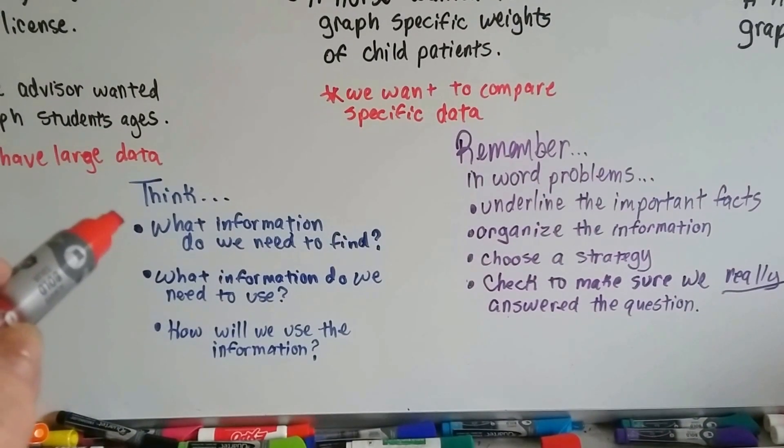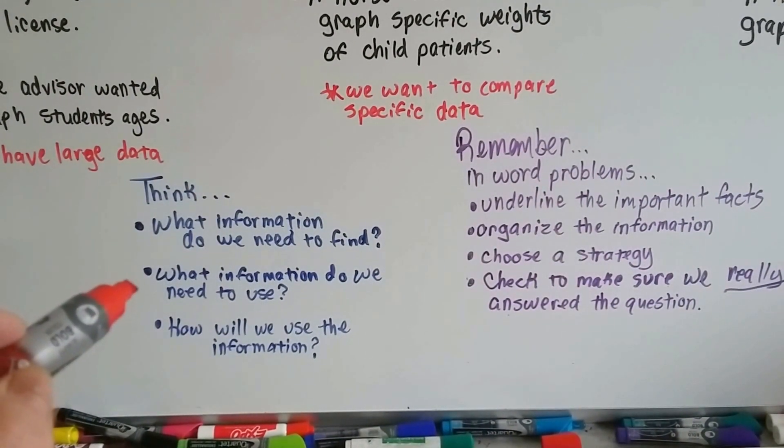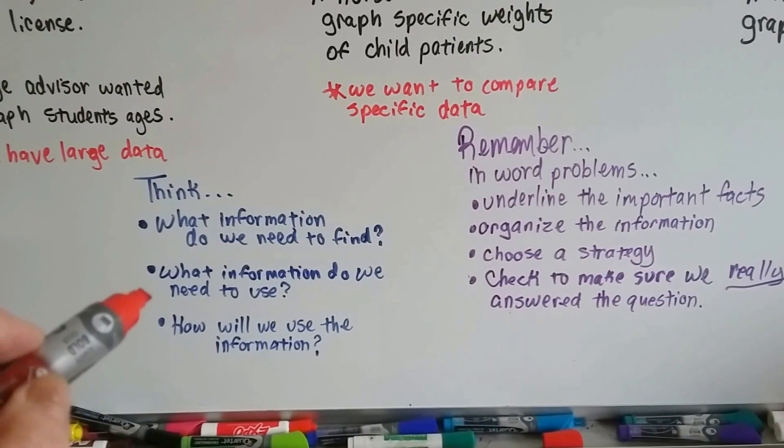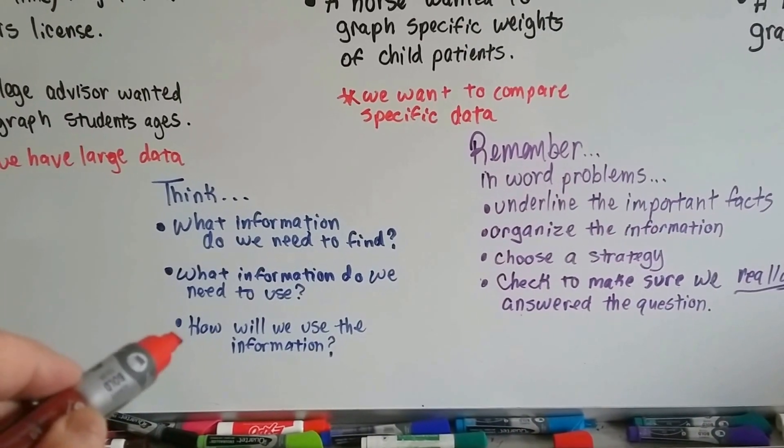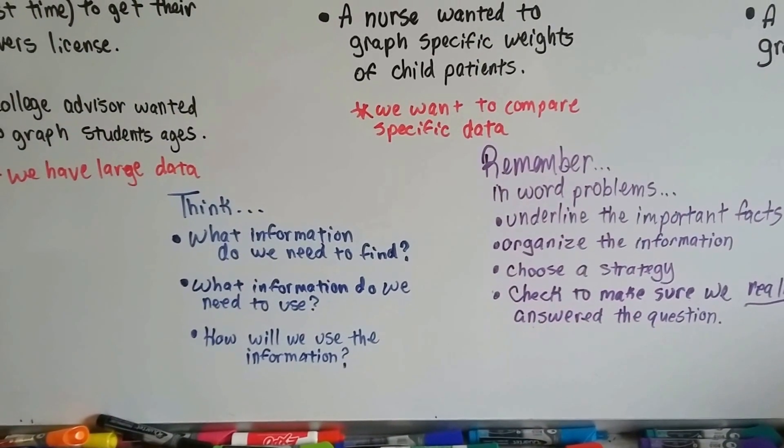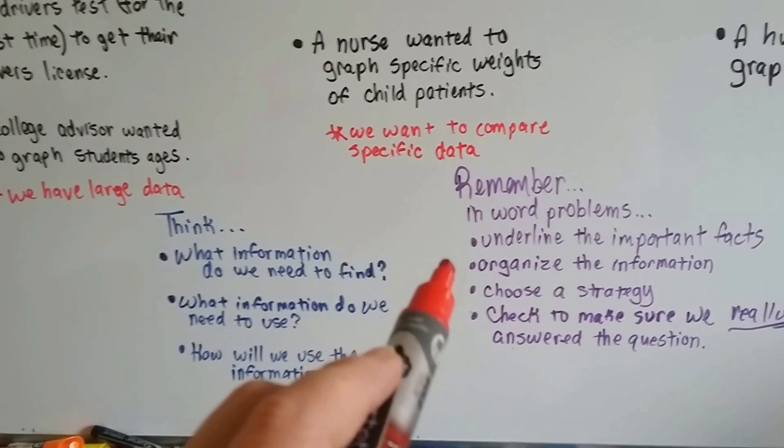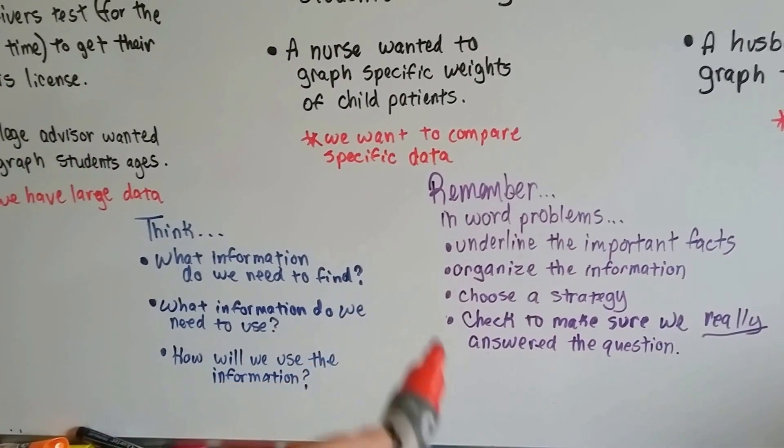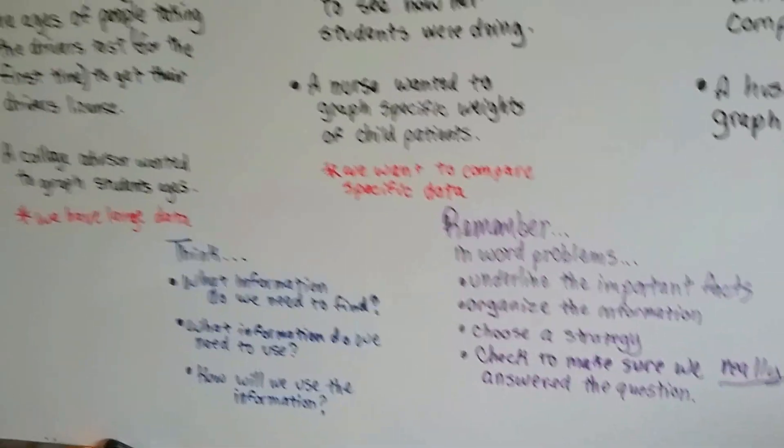You have to think to yourself, what information do we need? What information do we need to use? And how will we use the information? You want to underline the important information, choose your strategy, make sure you answer the question.